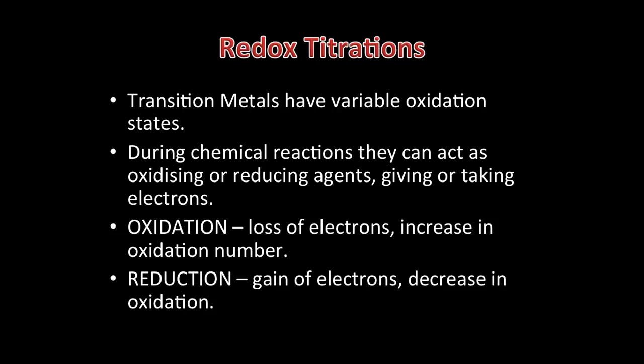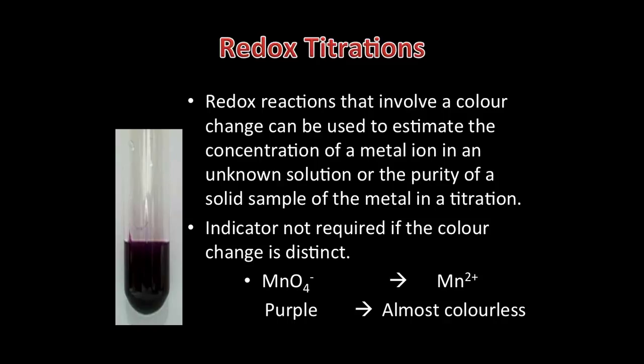In a redox reaction, electrons are transferred from one species to another. As transition metals have variable oxidation states, they can act as oxidising or reducing agents by giving or taking electrons. On the slide are the definitions of the key terms for oxidation and reduction. We can use redox titrations that involve a colour change to estimate the concentration of a metal ion in an unknown solution or the purity of a solid sample of a metal.